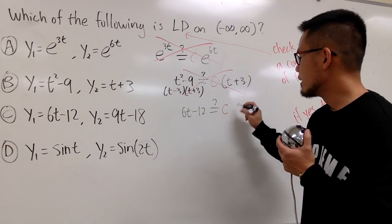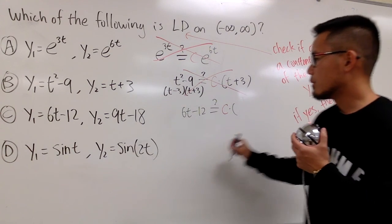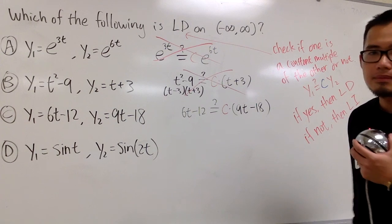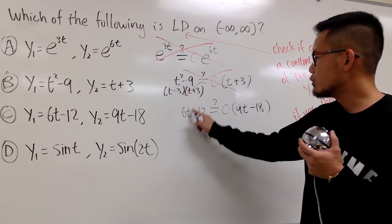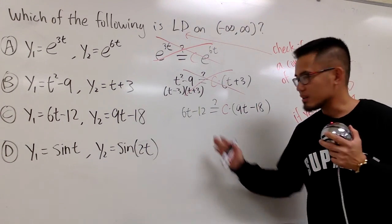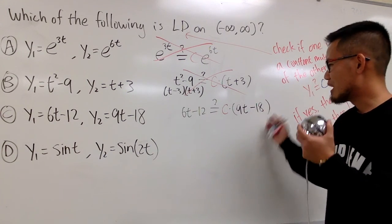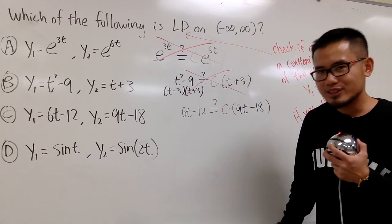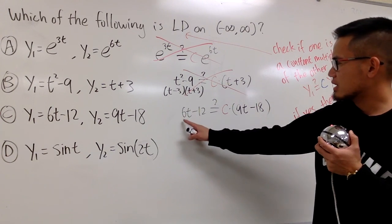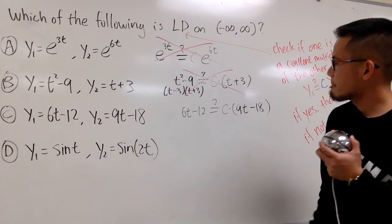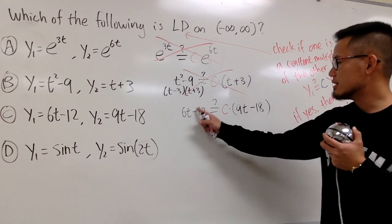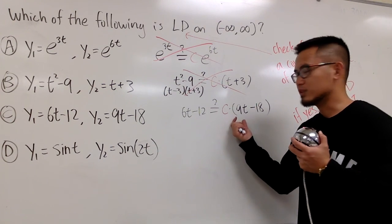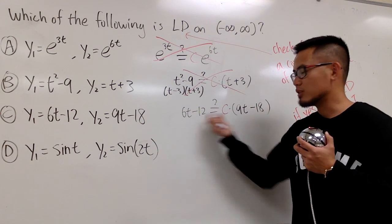So, let me write down 6t minus 12. Can I find a c value? And then, that will be multiplying with 9t minus 18. All right, so, in this case, I have t to the first, t to the first. So, the power kind of match, and this is a constant, this is a constant. So, it seems that I have a good hope with this, right? And I cannot suspect 6 and 9. All right, and then, this is negative 12, and this is negative 18. And let me just try to match the first term, right? Let me just match the first term.